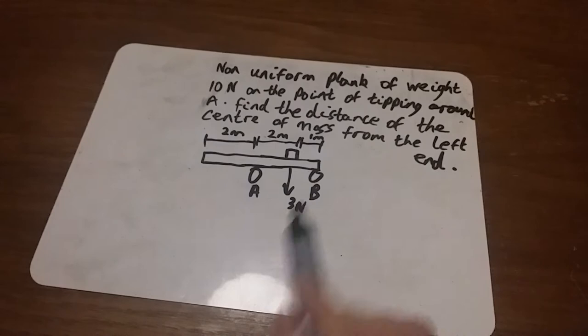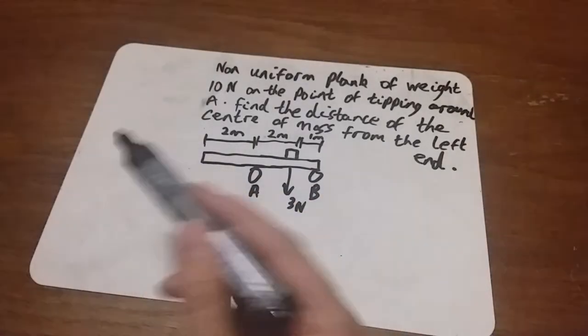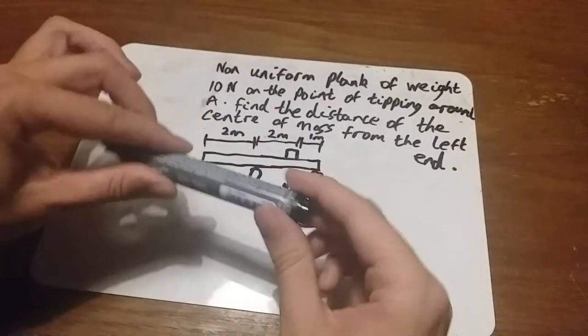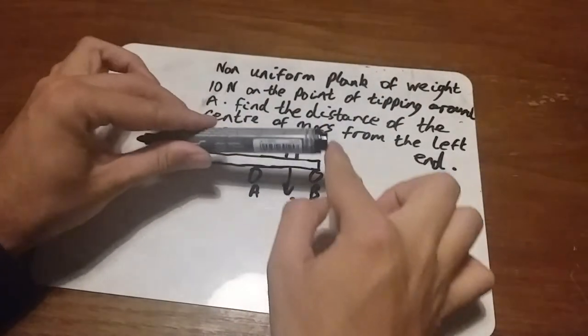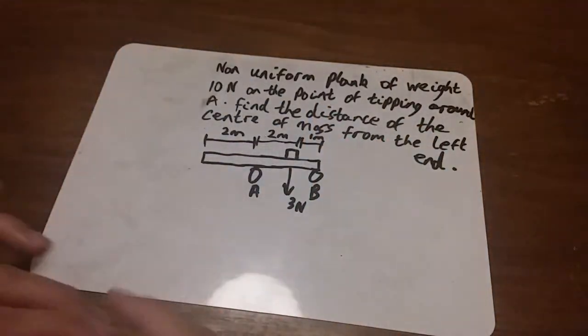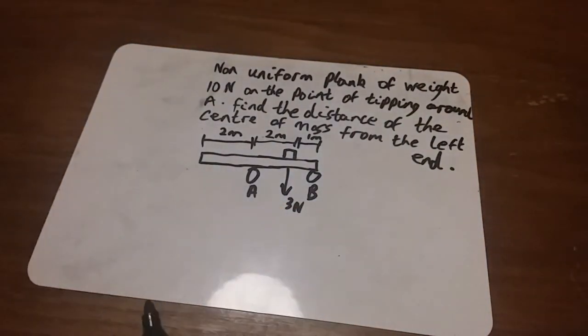I've given you a box. Instead of giving you the mass, I've given you the weight, three newtons pointing down. I've given you distances along the top. This whole plank is on the point of tipping around point A. Your goal is to work out the distance from the left-hand side of where the center of mass is. Alright, pause the video. Have a go.